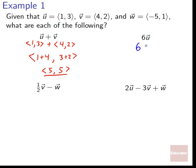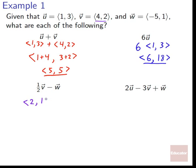Next, 6U: 6 times ⟨1, 3⟩. The 6 multiplies each component, giving ⟨6, 18⟩. Then one-half V: one-half times ⟨4, 2⟩ gives ⟨2, 1⟩. For one-half V minus W: ⟨2, 1⟩ minus ⟨-5, 1⟩. Distributing the negative, 2 plus 5 equals 7, and 1 minus 1 equals 0, giving ⟨7, 0⟩.